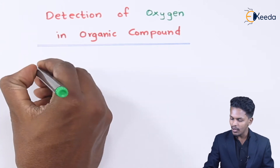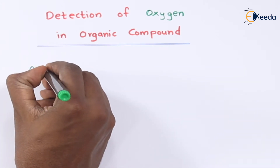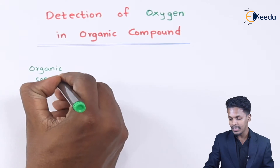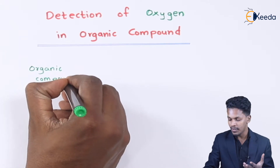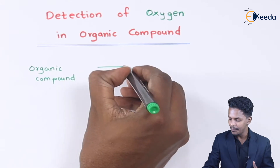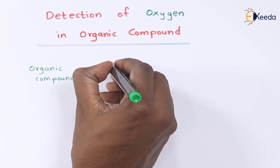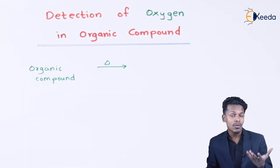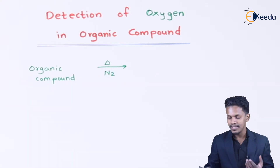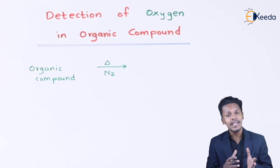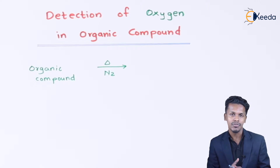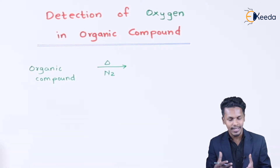For example, if we have an organic compound and we have to detect the percentage of oxygen in it, that compound is basically heated in the presence of nitrogen gas. Whenever the organic compound is heated with nitrogen, it will produce oxygen gas.